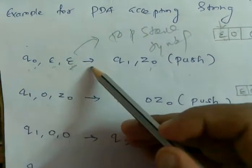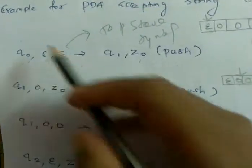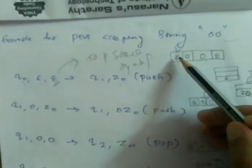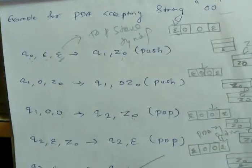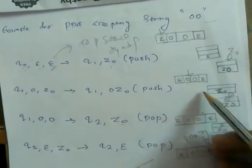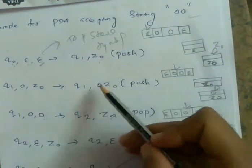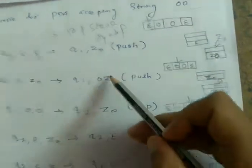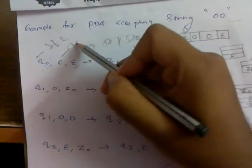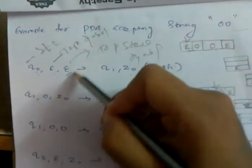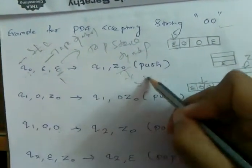So if I represent this: q0, epsilon, epsilon goes to q1 with Z0. In q0, epsilon goes to the stack with Z0 — Z0 push. Now, at each state, the tape symbol shows what the input is, and the top stack symbol shows what the stack top is.